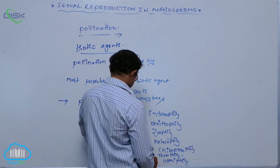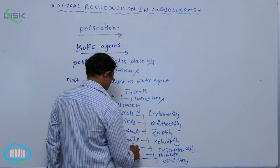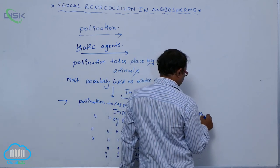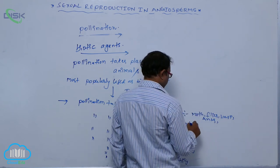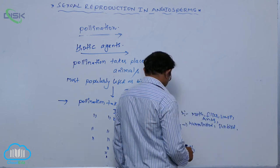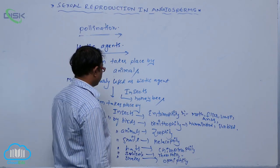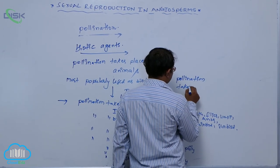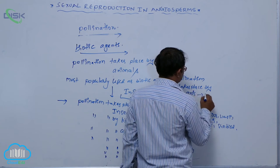Insects as biotic agents include moth, flies, wasps, and ants. These are the main insect groups involved. There are different types of mechanisms present. For example, pollination that takes place by ants is known as myrmecophily. Different types of mechanisms are present in insect pollination.